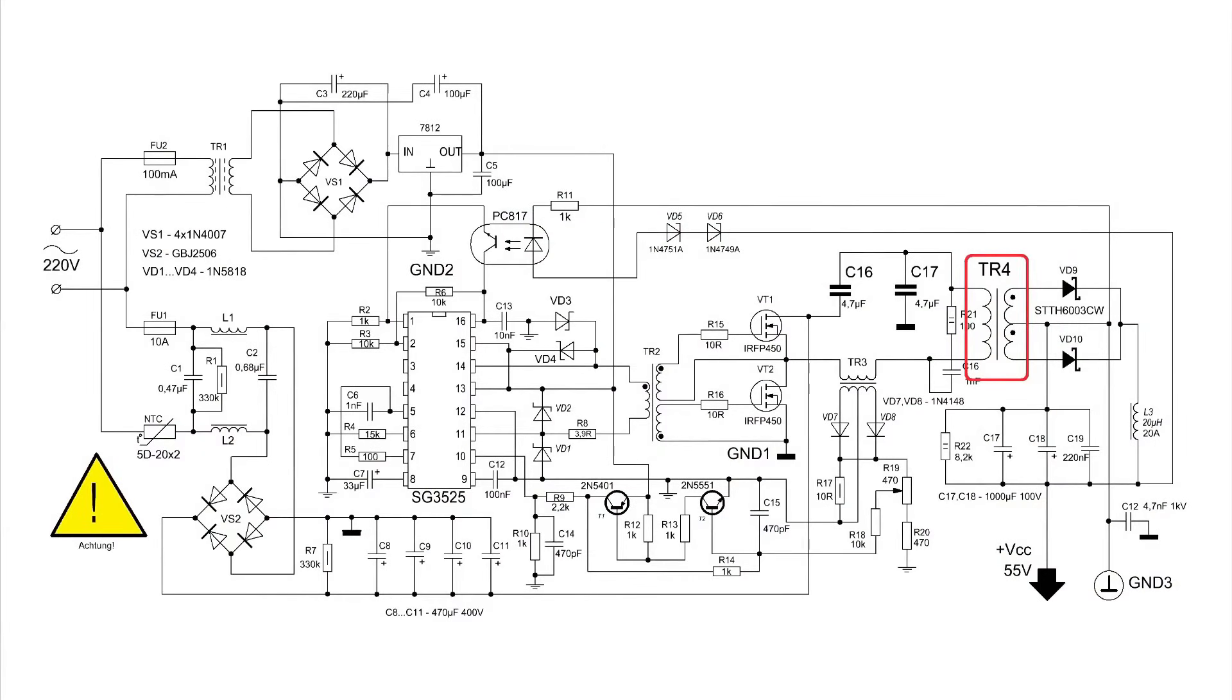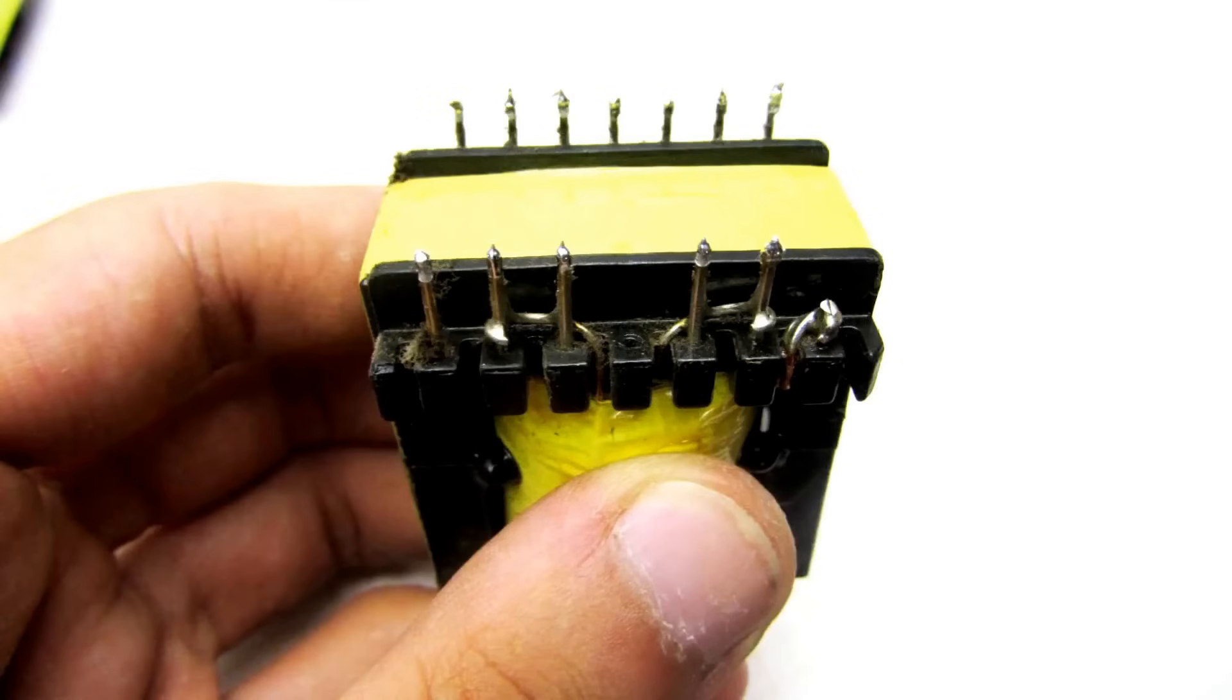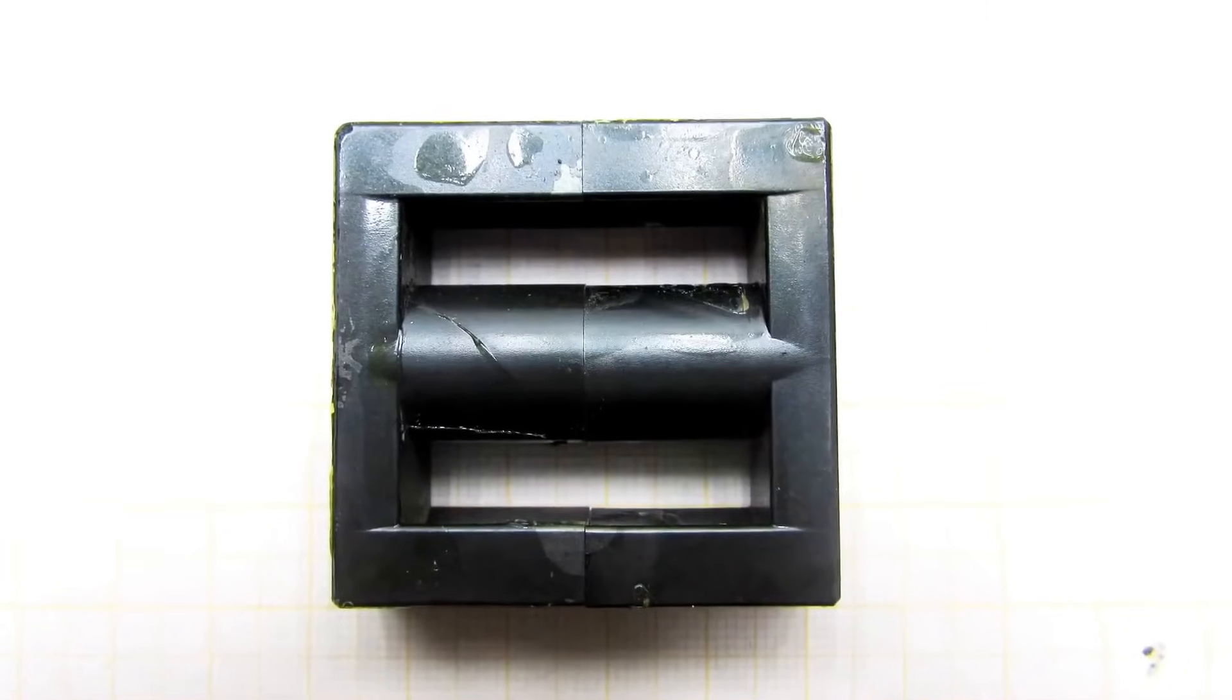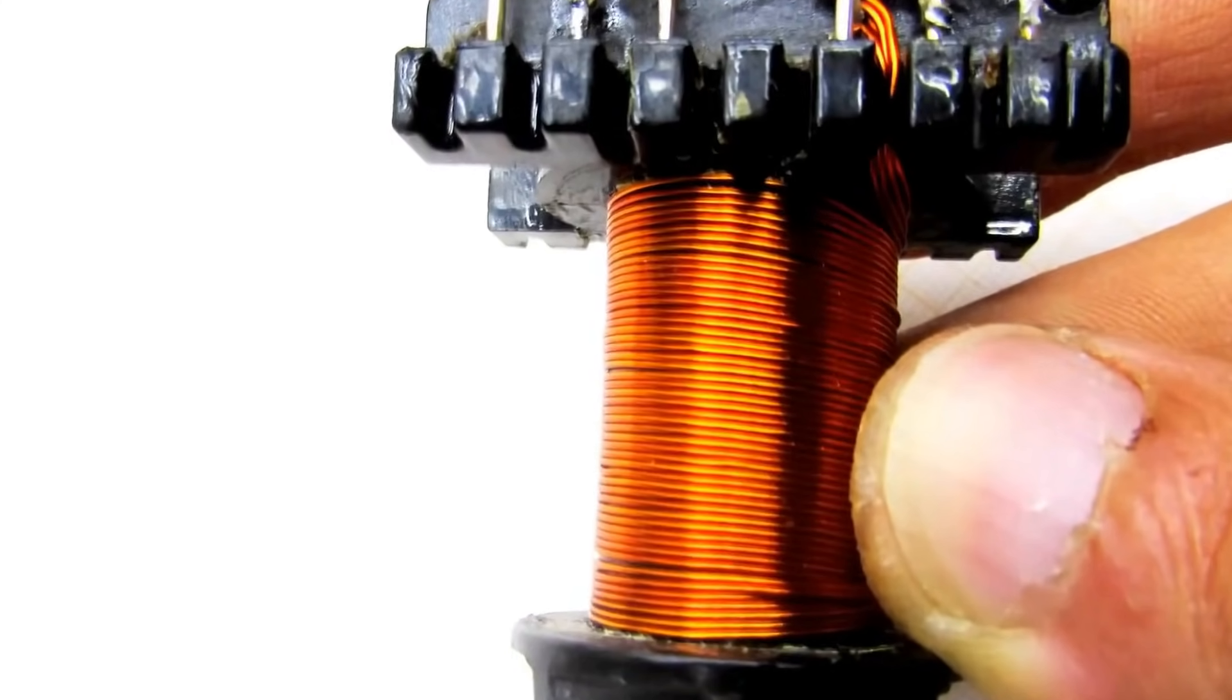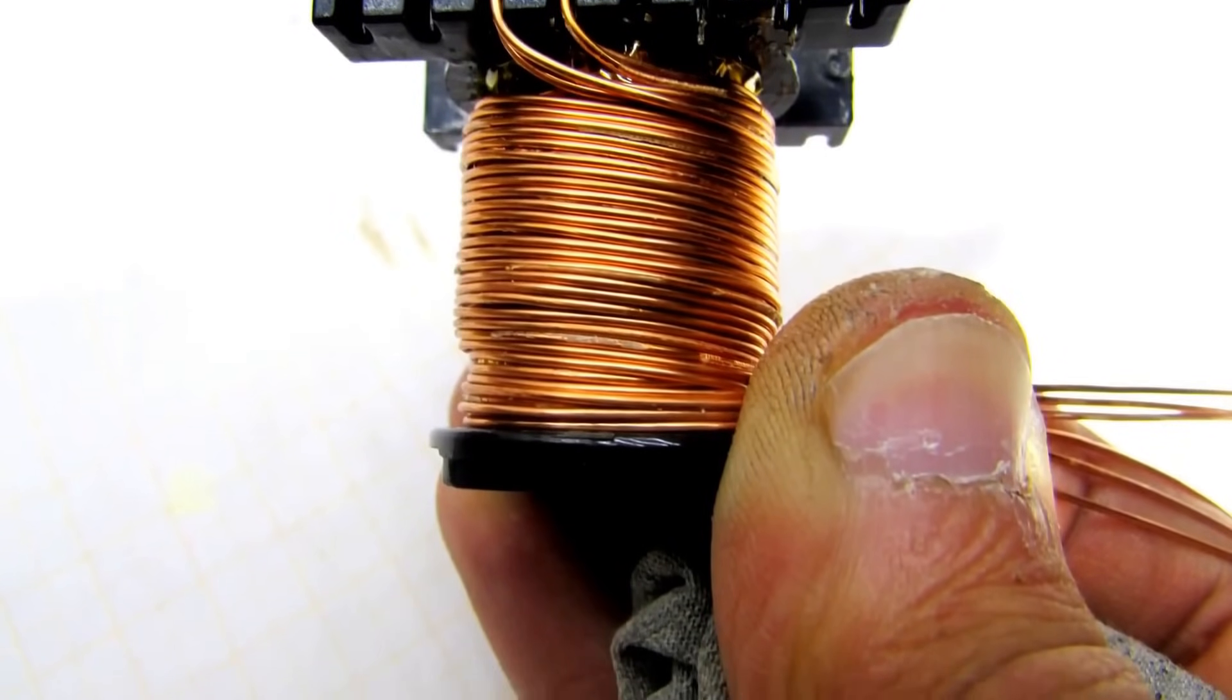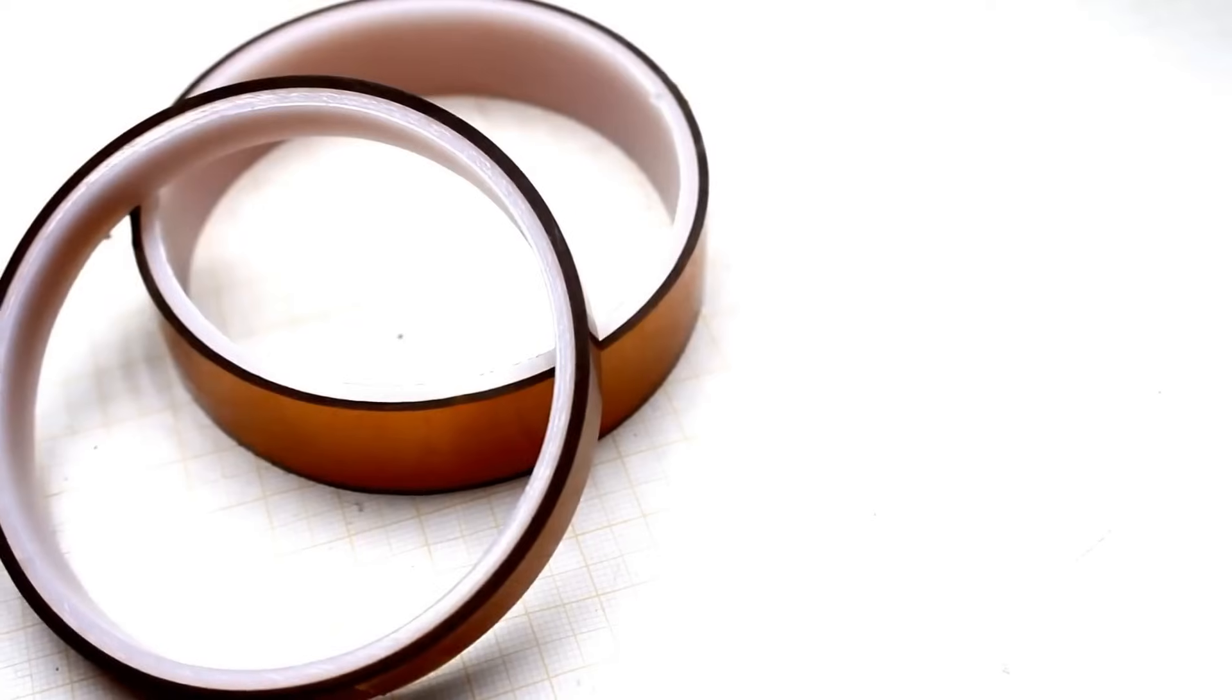Next in line is the power pulse transformer, which is designed using the excellent program. And in front of you now is a screenshot of my core calculation. The core is U-shaped, although it can also be ring-shaped. There should be no gap between the halves. After calculating the transformer, we wind half of the primary winding onto the bare frame, then the entire secondary winding, and on top of that, the remaining half of the primary. Each layer is insulated. I used thermal tape as insulation.